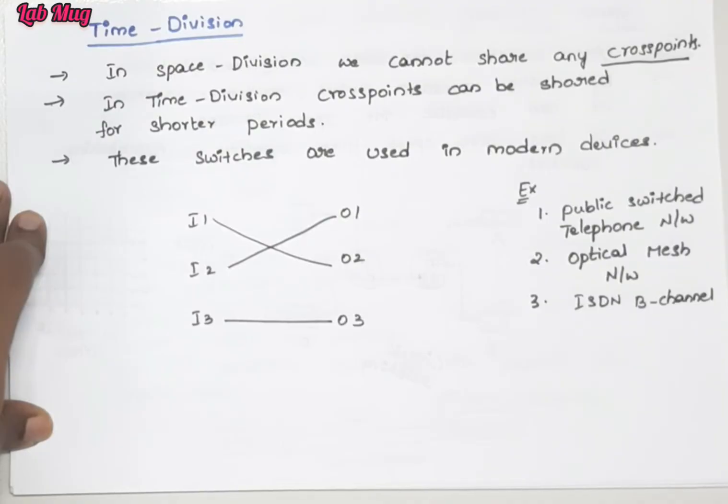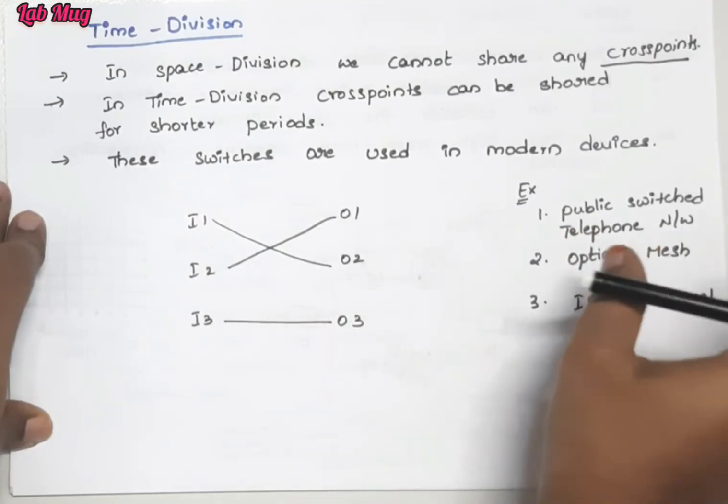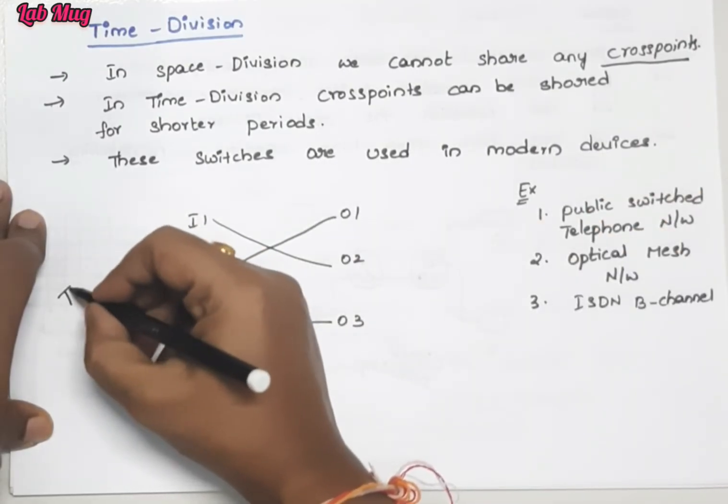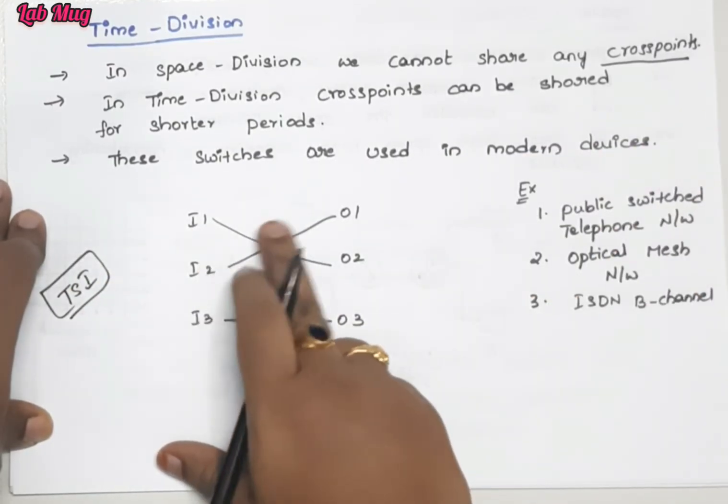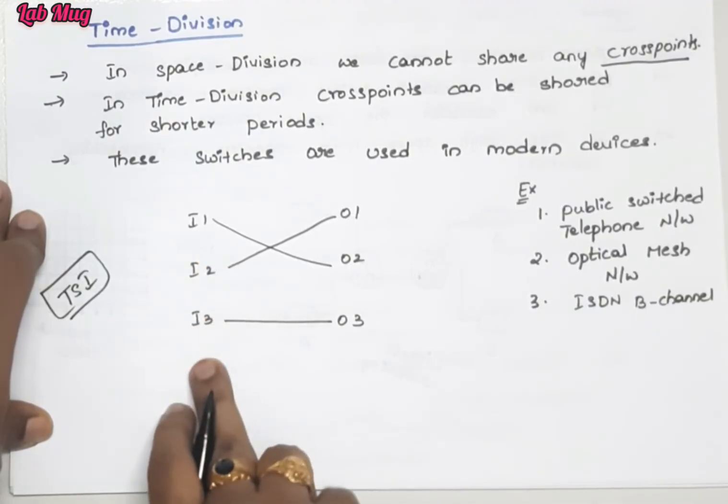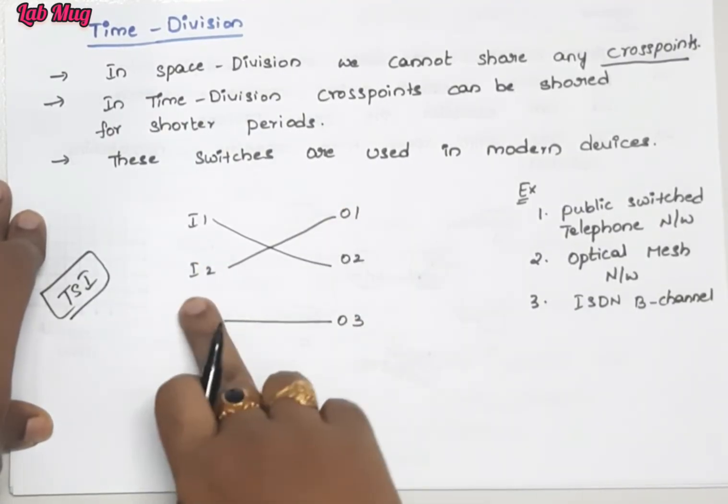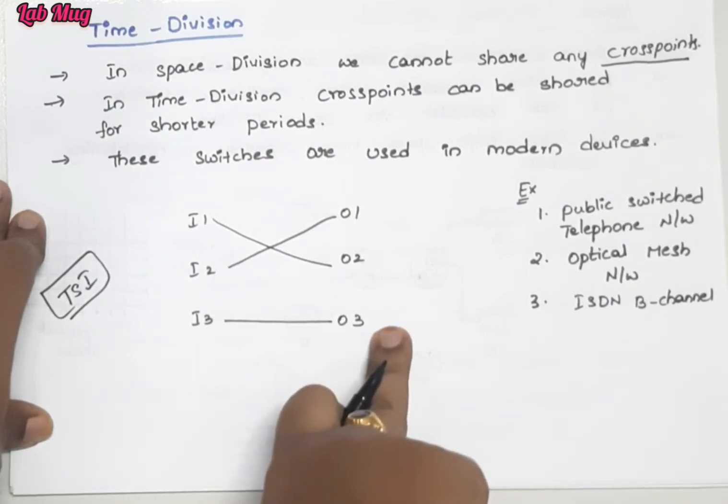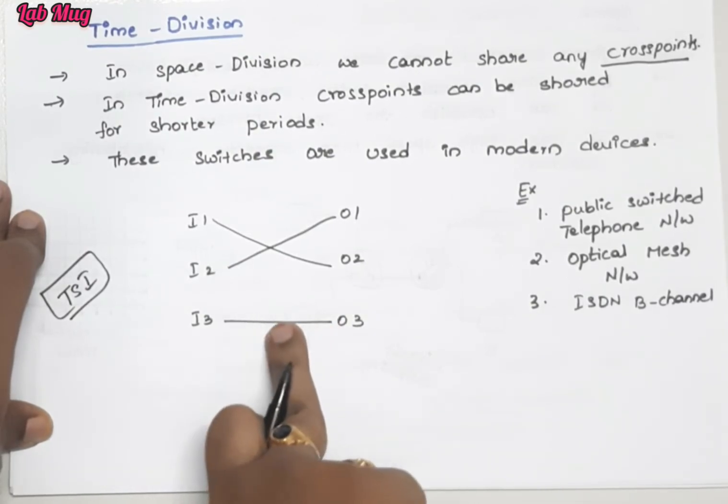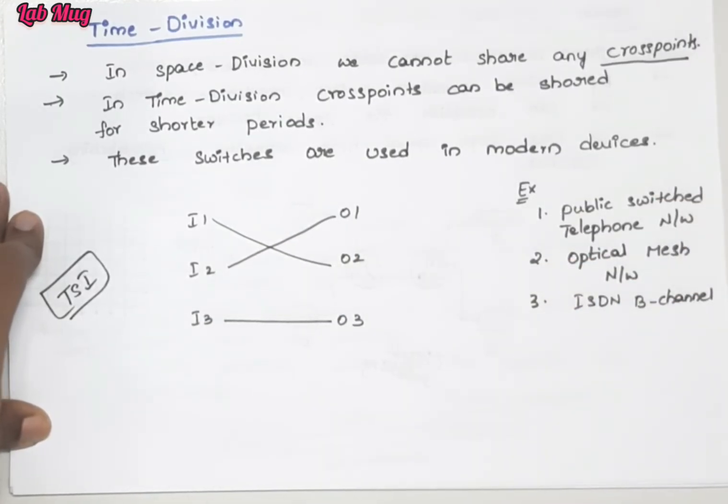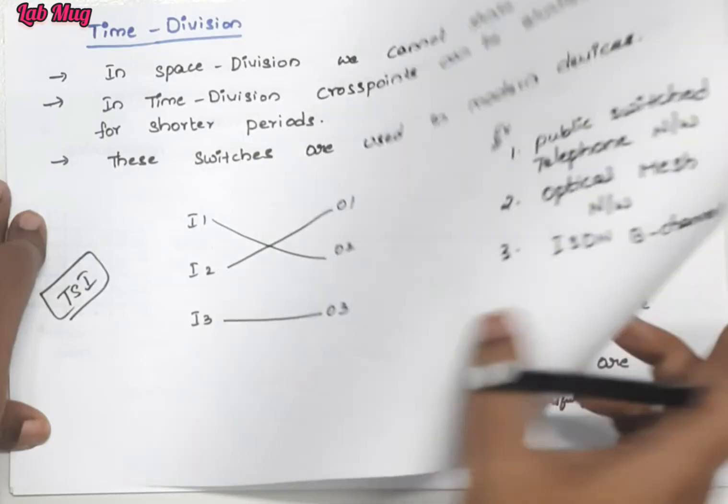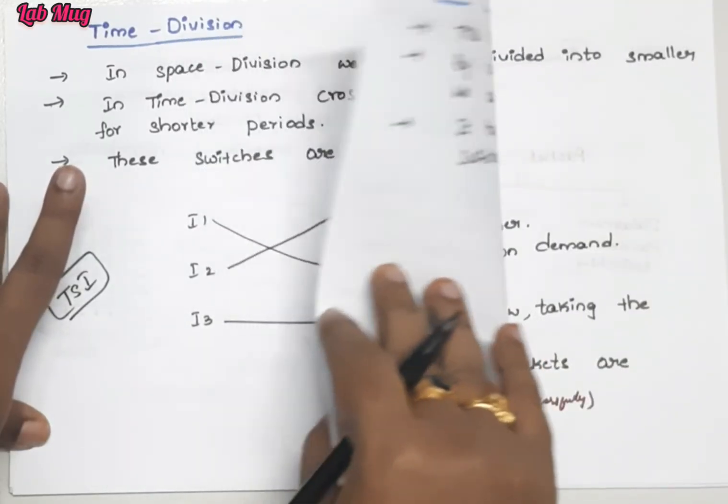In time division we use modern devices. Each switching multiplexing switching technique uses time slot interchange technique. The time slot interchange technique works like this: there are periods - time 1, 2, 3. This goes to O1, this to O2, this to O3. Whatever time interval there is, and whatever connection needs to be established according to the schedule, we pass it accordingly.